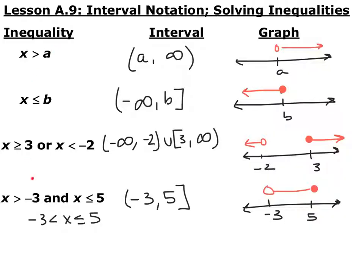Here's the inequality notation. Anytime you have x greater than a, it starts at a and goes all the way up to positive infinity. It's always a parenthesis on any infinity because you can never actually achieve the value of infinity. If it's strictly greater than or strictly less than, it is also a parenthesis.